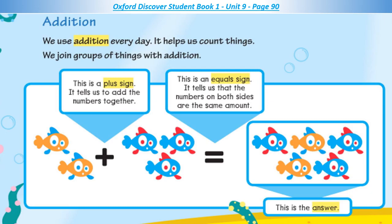Addition. We use addition every day. It helps us count things. We join groups of things with addition. This is a plus sign — it tells us to add the numbers together. This is an equal sign — it tells us that the numbers on both sides are the same amount. This is the answer.